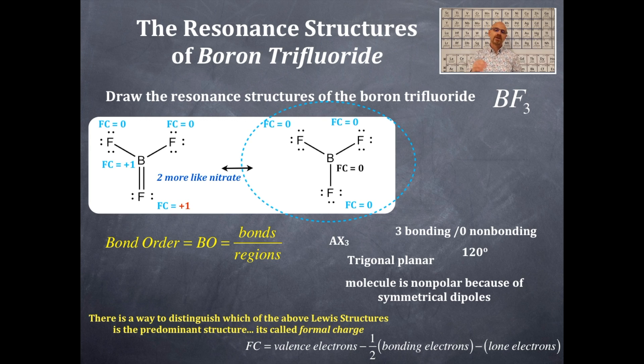The bond order here. If we look at the preferred dominant resonance structure, the number of bonds is three. The number of regions is three. So we're going to get a bond order of one. And that corresponds to single bonds for boron trifluoride. That is absolutely perfect.